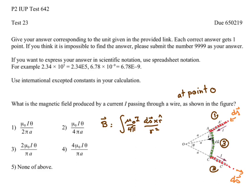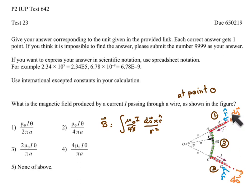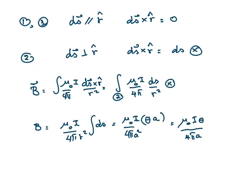In part one, ds points in the same direction as r-hat, and in part two, ds points in the opposite direction of r-hat. But in both parts, ds is parallel to r-hat — same direction here and opposite direction there. When two vectors are parallel, their cross product equals zero.